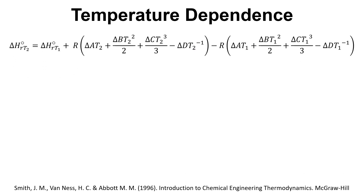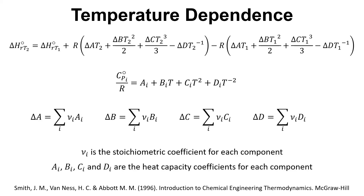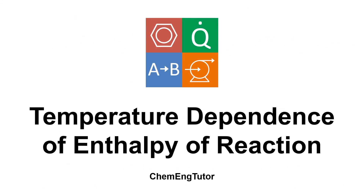To summarise: Cp is given in the form Cp divided by R equals A plus Bt plus Ct² plus Dt⁻², and the stoichiometric coefficients are used to obtain delta A, delta B, delta C, and delta D. That's been a video about the temperature dependence of enthalpy of reaction. I hope you found it useful — please remember to like, comment, and subscribe. Thanks very much for watching.